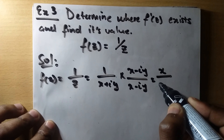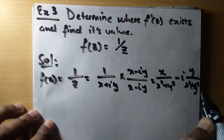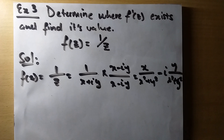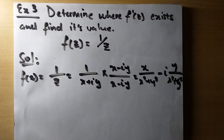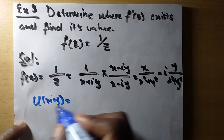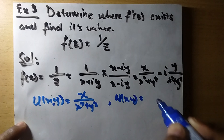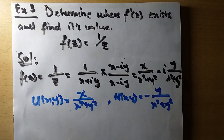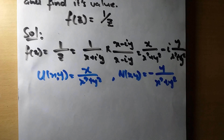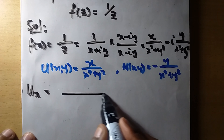We're going to introduce the complex conjugate, which is (x − iy) over (x − iy). This will become x over (x² + y²) minus i times y over (x² + y²). So we can clearly see that our u(x, y) is given by x over (x² + y²), and our v(x, y) is given by negative y over (x² + y²).